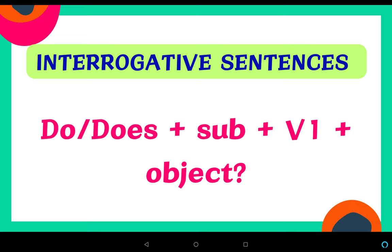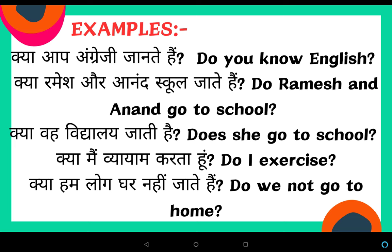After this we discuss interrogative sentences. In interrogative sentences: Do/Does + Subject + V1 + Object + Question Mark. For example: 'क्या आप अंग्रेज़ी जानते हैं?' — Do you know English? 'You' is the subject, so 'do' is used. Do you know English?